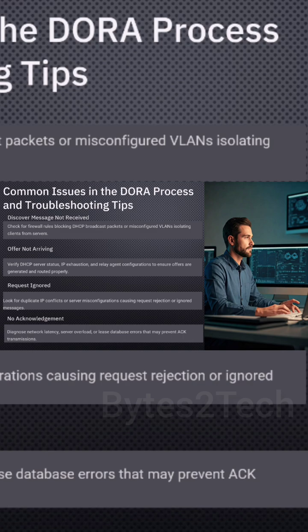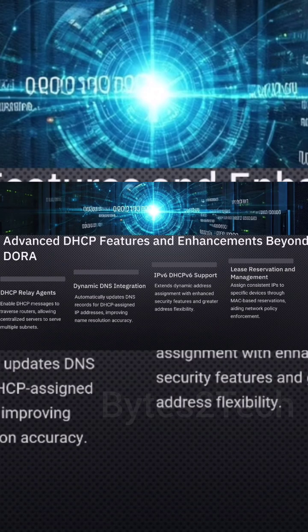Lease duration — like how long the client can keep the IP. Exactly. It's not usually permanent. The server says you can use this address for, say, 24 hours or whatever the configured time is. But if the client still doesn't have an IP, how does the server send this offer back to just that specific client? It heard a broadcast — good question. This is where it gets a bit nuanced between the network layers.